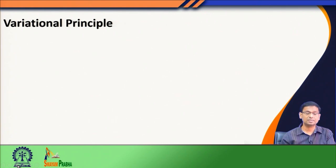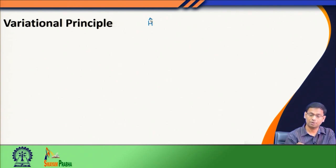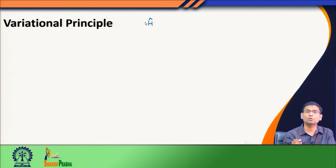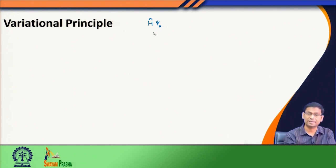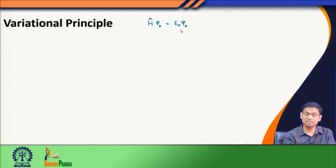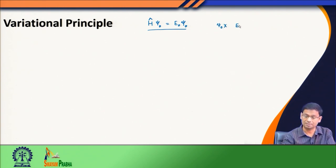The first approximate method we discuss is known as the variational principle. We have a Hamiltonian which is very complex — it has two-electron operators. Suppose we know the exact solution; the lowest eigenfunction of that solution is ψ₀ and the corresponding energy is E₀. This would be the solution we would love to have, but the problem is our Hamiltonian is so complex that we do not know ψ₀ nor E₀ exactly.